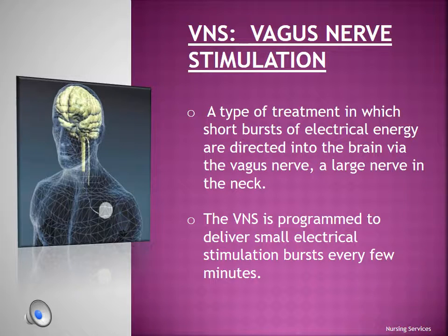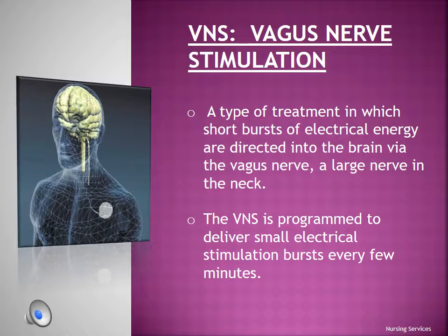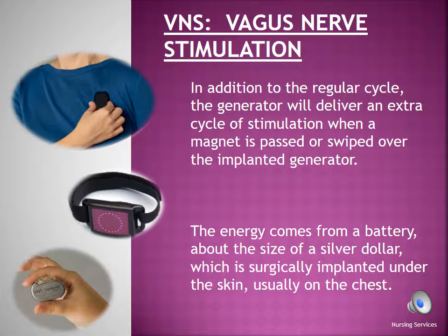Most seizures can be controlled with medication. However, in some individuals, medications alone are inadequate to prevent frequent uncontrolled seizures. In these cases, a vagal nerve stimulator, or VNS, may be implanted under the skin in the chest area to help control the seizures. A VNS is programmed to deliver short bursts of electrical energy to a specific nerve via a tiny wire. These bursts of energy interfere with the brain's electrical activity and stop the seizure. Additionally, vagal nerve stimulators can deliver extra cycles of electrical stimulation when a medical magnet is passed or swiped over the implanted VNS.